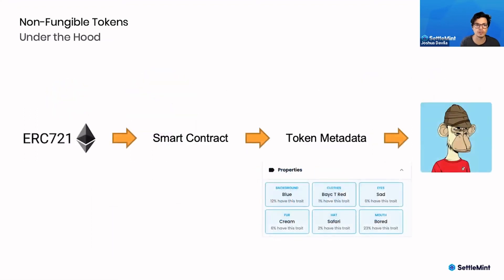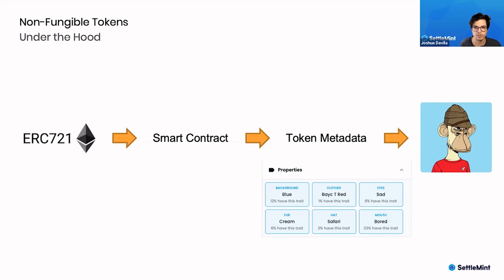The NFT industry in general has been growing quite quickly, and a big reason why is the use of standards. The most common standard, and one of the first, for NFTs is called ERC-721. This is a framework for a type of smart contract for non-fungible tokens, particular to the Ethereum blockchain where most of the activity takes place. Inside that smart contract you have a function called token metadata.